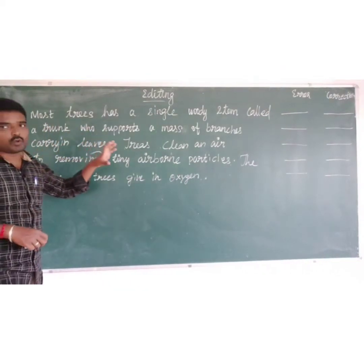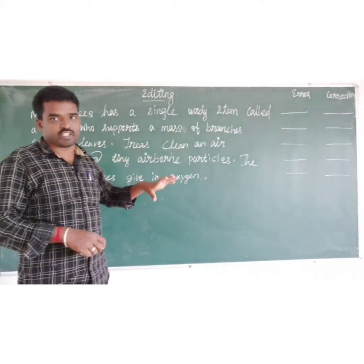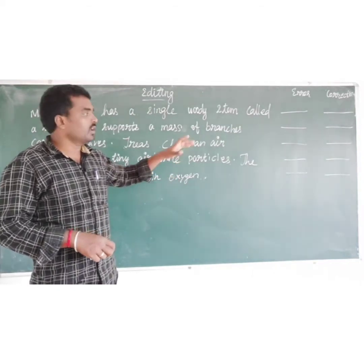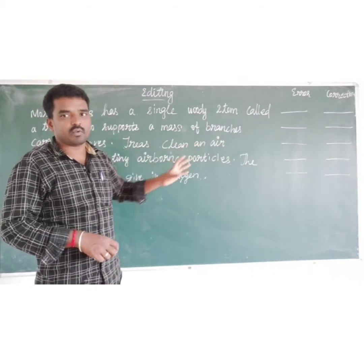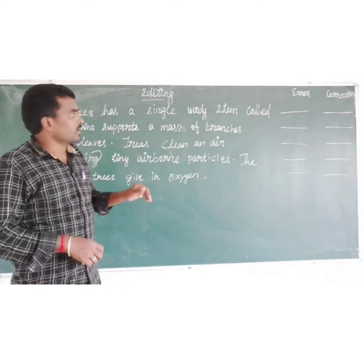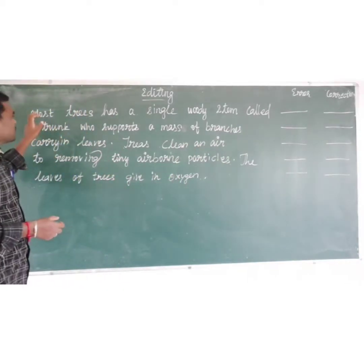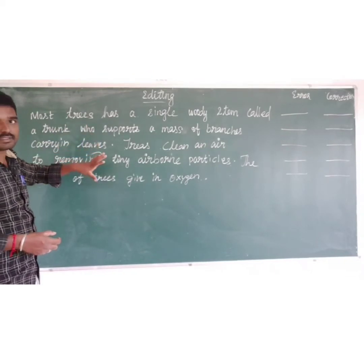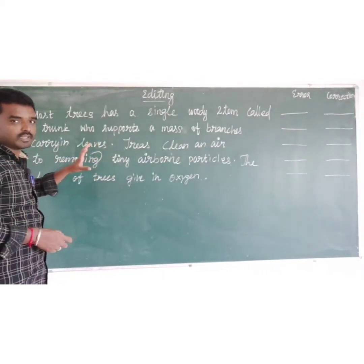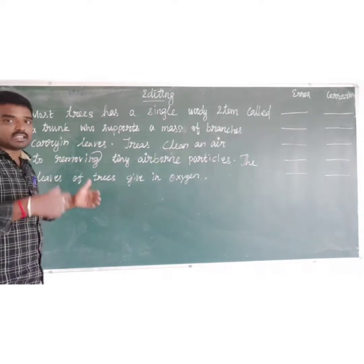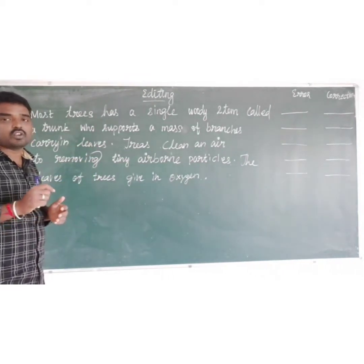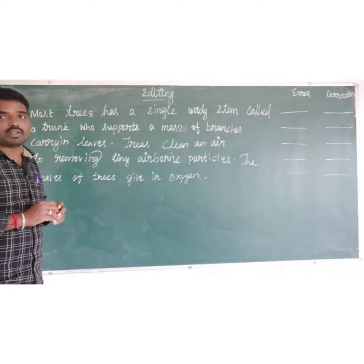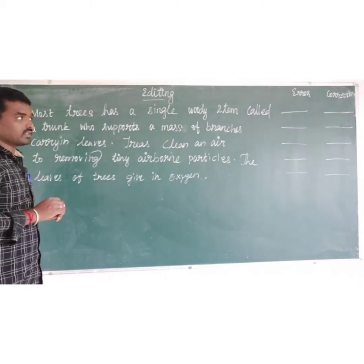Before you are going to attend this question, there are four more questions. Some questions are having five options, some questions are having four options. This question is having five lines and five options. Before we are going to answer the question, we want to read the question minimum three times — how many times? Three times fully.